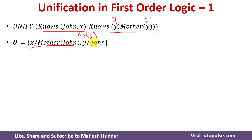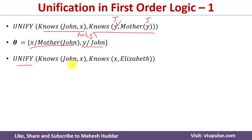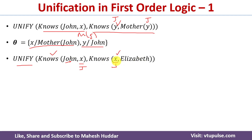In the last example, we want to perform unification between Knows(John, x) and Knows(x, Elizabeth). There is the same variable x present in both expressions. If we try replacing x with John, the first expression becomes Knows(John, John) and the second becomes Knows(John, Elizabeth). These are not identical. Because the same variable is present in two expressions, we cannot perform unification and unification fails in this case.